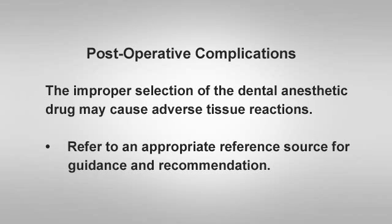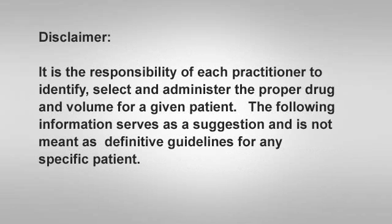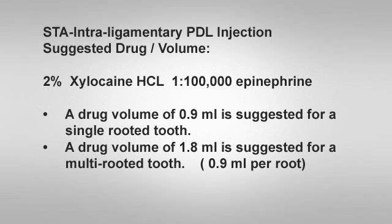Please refer to an appropriate reference source for guidance pertaining to local anesthetic solutions and specific volumes for each injection. It is the sole responsibility of each practitioner to identify, select, and administer the proper drug and volume for a given patient. The following information serves as a suggestion and not as definitive guidelines. The suggested drug and volume for performing the STA intraligamentary injection is 2% xylocaine HCL with 1 part per 100,000 epinephrine. A drug volume of 1.5 cartridge or 0.9 milliliter is suggested for a single rooted tooth. For a multi-rooted tooth, 0.9 milliliter for each of the mesial and distal roots may be administered, for a total of 1.8 milliliters.